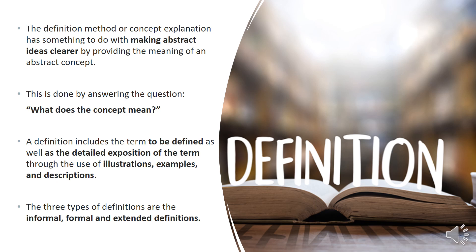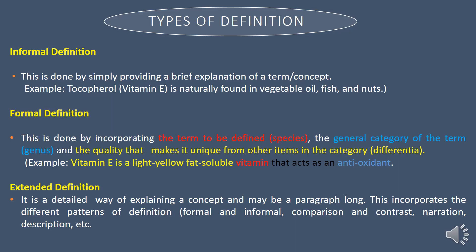Under the general scope of definition, there are three types: informal, formal, and extended definitions. For the informal definition, this is done by simply providing a brief explanation of a term or concept. For example, vitamin E is naturally found in vegetable oil, fish, and nuts.